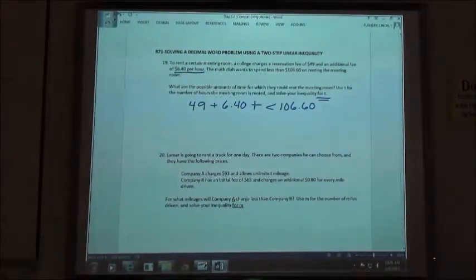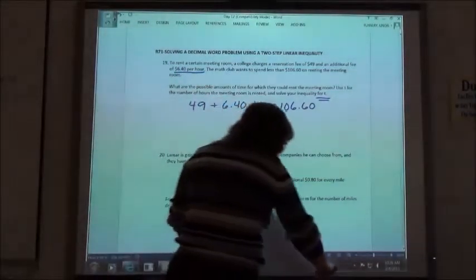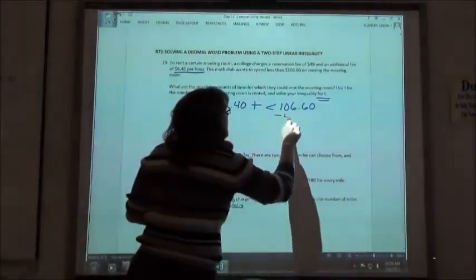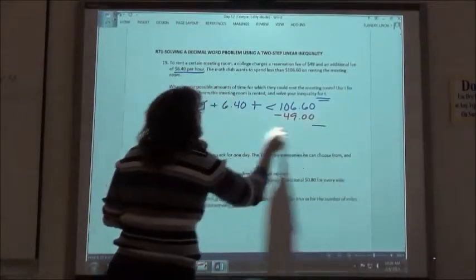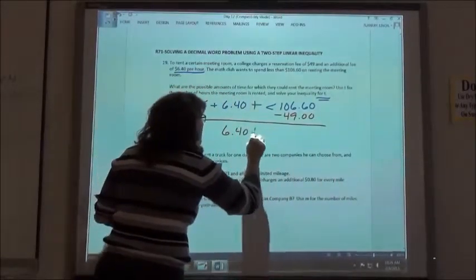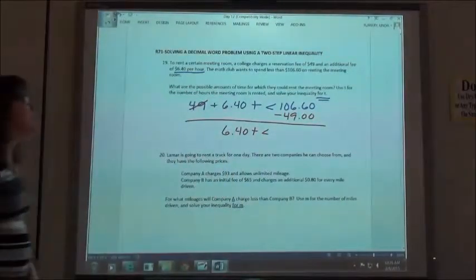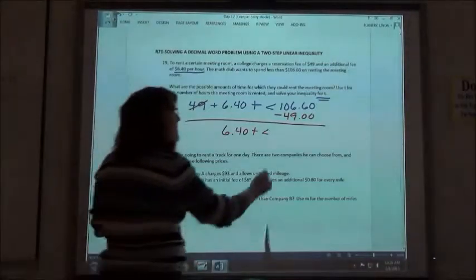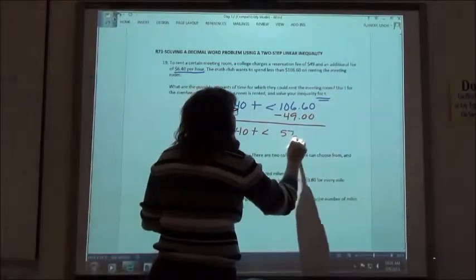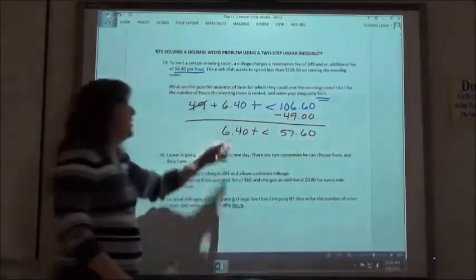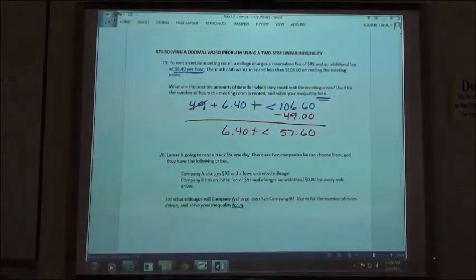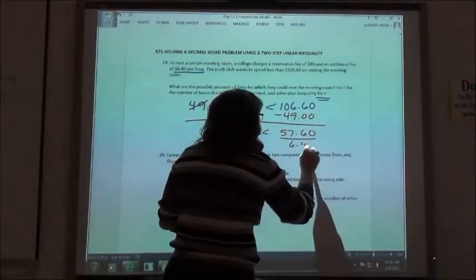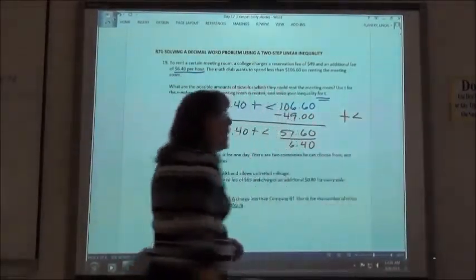So I've got my inequality written down. I want to solve that for T. The first thing I should do is? Minus the 49. I'm going to let you go ahead and do that for me with your calculator. So $106.60 minus 49. 57.60. And then in order to solve that for T, I'm going to divide by the $6.40.